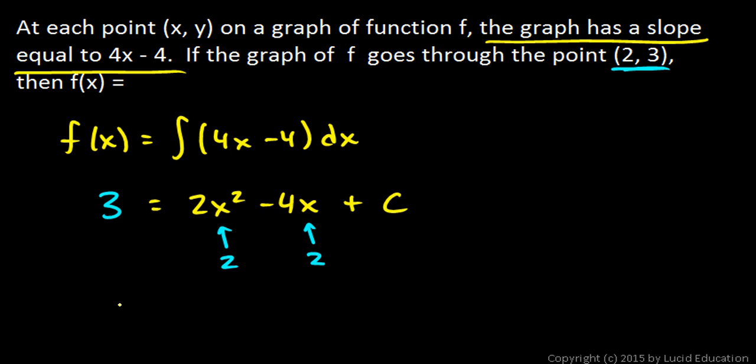So we get a simple equation. 3 equals 2 times x squared, that's 2 times 4, which is 8, minus 4 times 2, which is 8, plus c. These obviously cancel out, so c has to equal 3.